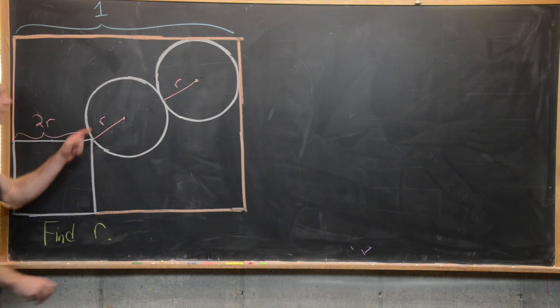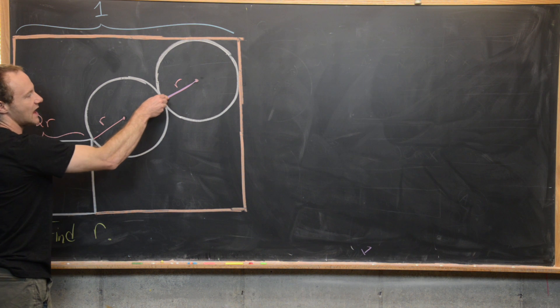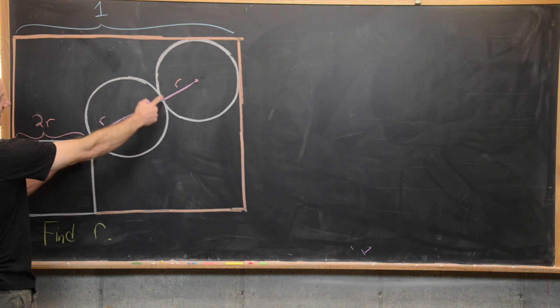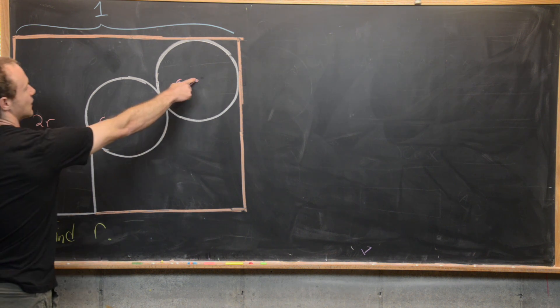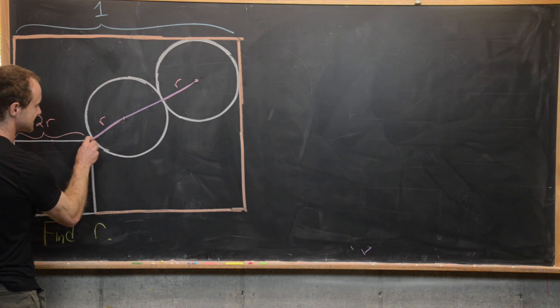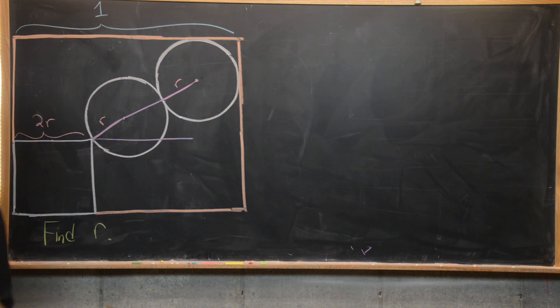So the triangle that I want to build from these circles goes like this. It's going to have hypotenuse formed by the diameter of this central circle and then a radius of this top right circle.